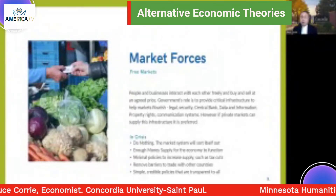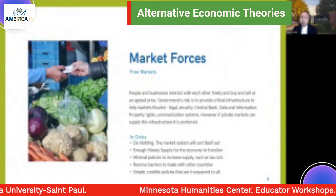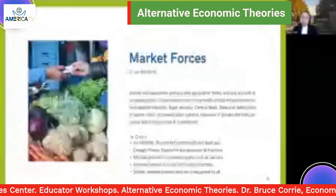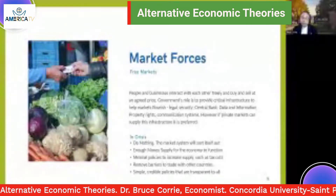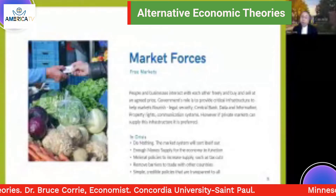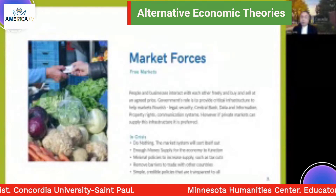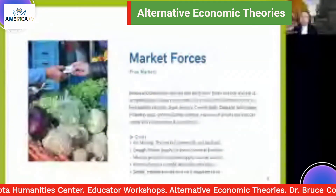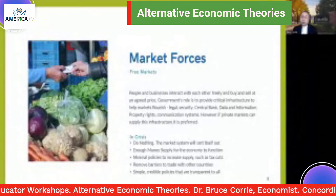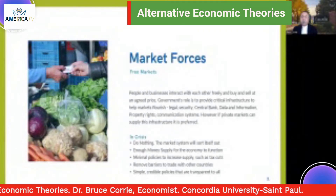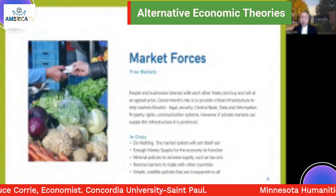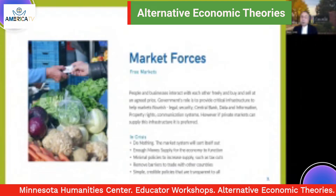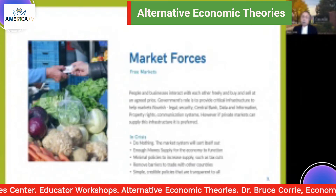Let's start first with market theories — theories around the free market. As you can see in this picture, there's an exchange going on: someone is buying vegetables and getting paid for it. There is this process of demand and supply — consumers are demanding something and a business person is supplying it, and at the right price, both of them are going to be happy. All that the government needs to do is make sure that this transaction works seamlessly and with a minimum of barriers, providing critical infrastructure to help these markets flourish — for example, legal systems, security, a central bank to monitor and control the money supply, good data and information, protection of property rights, and good communication systems. Even here, private markets can supply this infrastructure.